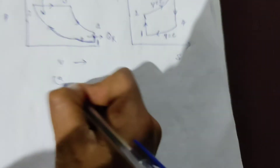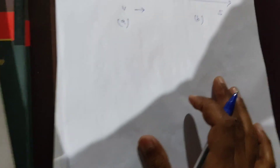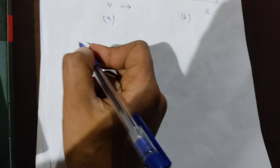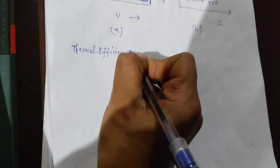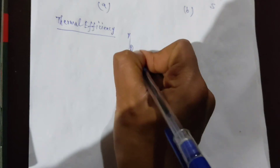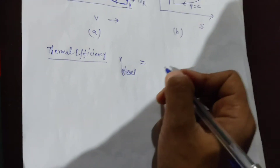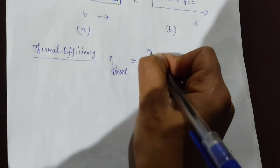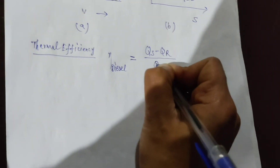Now let's talk about the thermal efficiency of this cycle. Thermal efficiency is defined as output upon input. Work output equals heat supplied minus heat rejected, divided by heat supplied. This enclosed area in the PV diagram represents the work done.